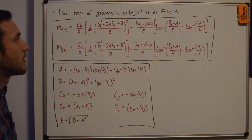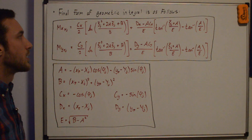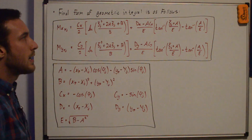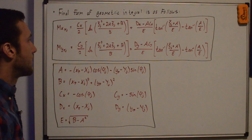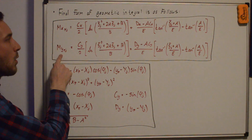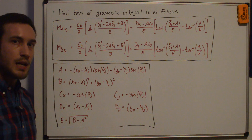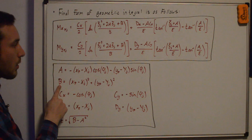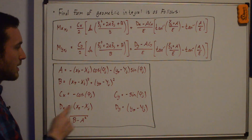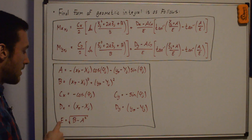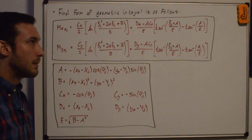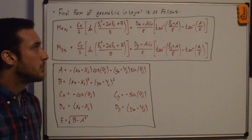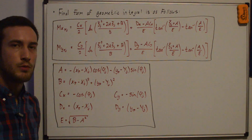Here is the final form of the geometric integral, which should look familiar if you've been following these videos. The only difference is that we plug in CX and DX, or CY and DY, in place of the normal C and D. So we have expressions for MXPJ and MYPJ. The A and B terms in the denominator are the same as in the IIJ video; only CX, DX, CY, and DY have changed. E is a convenient variable equal to the square root of B minus A squared. These results will be used in future videos to compute streamlines for the source panel method.